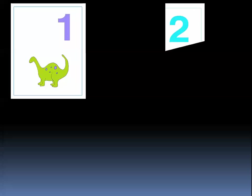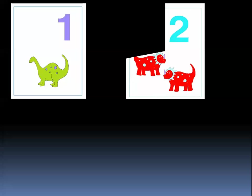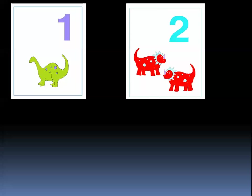What comes after one? Comes number two. This is number two. Let's count: one, two. This is number two. So we have one, two.